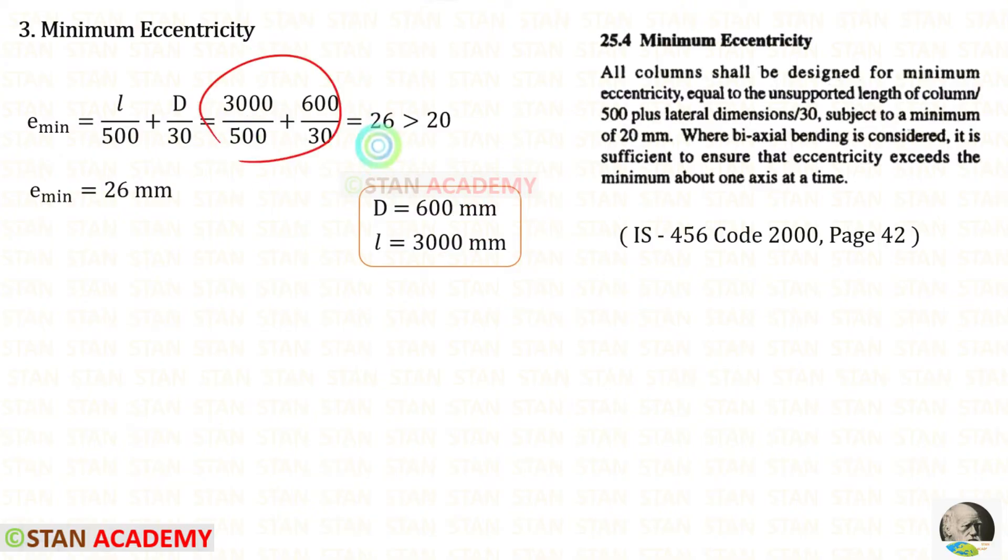When we calculate this we will get 26. From these two we have to take the maximum value. 26 millimeters is maximum, so the minimum eccentricity is 26 millimeters.